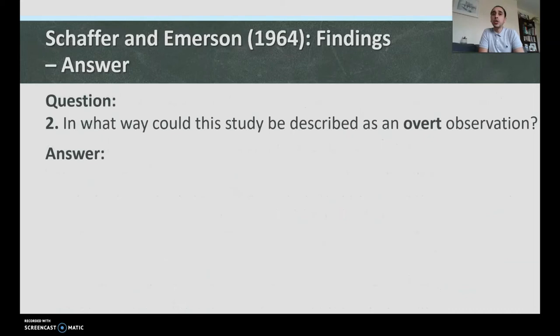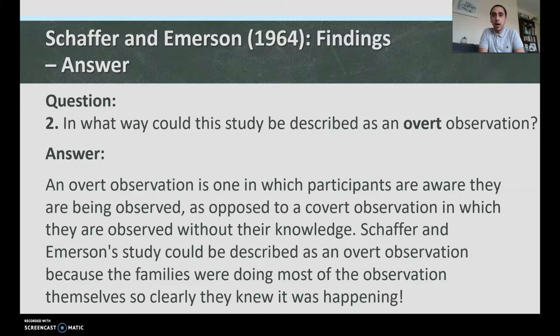Question two: in what way could this study be described as an overt observation? An overt observation is one in which participants are aware they are being observed, as opposed to a covert observation where they are not. Schaefer and Emerson's study could be described as overt because the families were doing most of the observation themselves — they clearly knew it was happening. They signed up, the researchers knocked on their door, and they knew they were being observed.